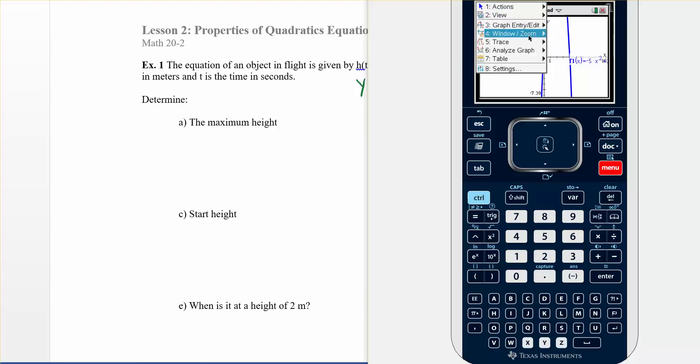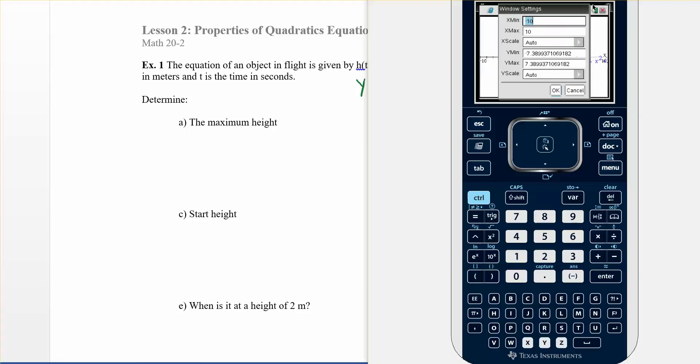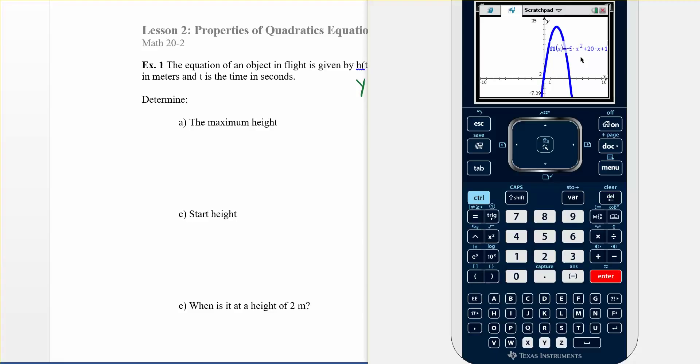So I'm going to go window, zoom, settings. My y max needs to be bigger. So delete, okay, my y max, I'm going to say, I don't know, like 25 maybe, yep, I can see the top now. Not a big deal if you didn't get it that time, just keep going up.